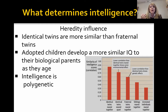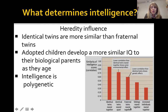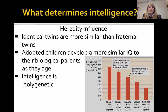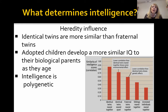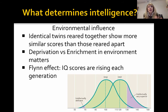Looking at the data, identical twins reared together show the highest IQ similarity, while fraternal twins reared together are significantly lower — same environment but different genetics — pointing to a genetic influence. Adopted children also show more similar IQ to their biological parents as they age. Intelligence is thought to be polygenic, meaning it's made up of a combination of different genes rather than a single gene for intelligence.